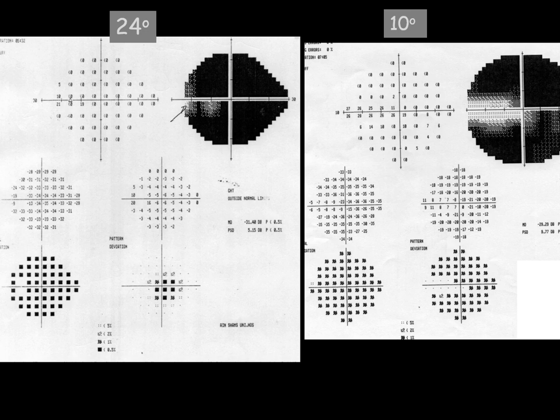In this example, the same patient was tested twice. With the 24-degree test, you can see almost everything in the central 10 degrees is affected except one point here and one point there. But on repeating with the central 10-degree test, you can see several points that are not affected. This is important for follow-up — over time, changes may appear that we can detect with the central 10 degrees but would miss with the 24-degree test.